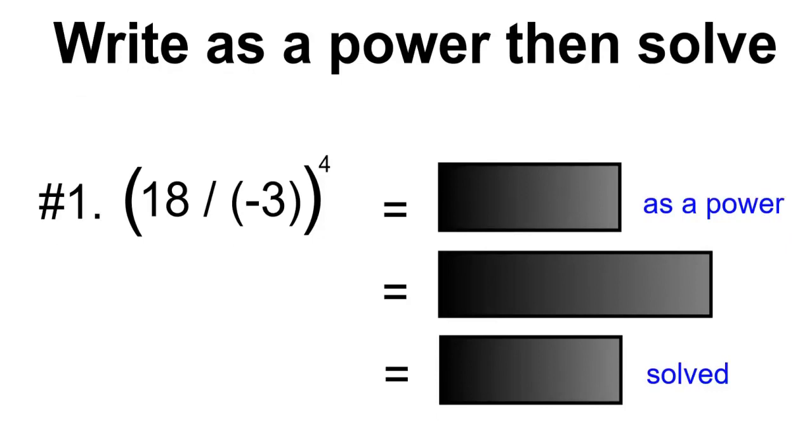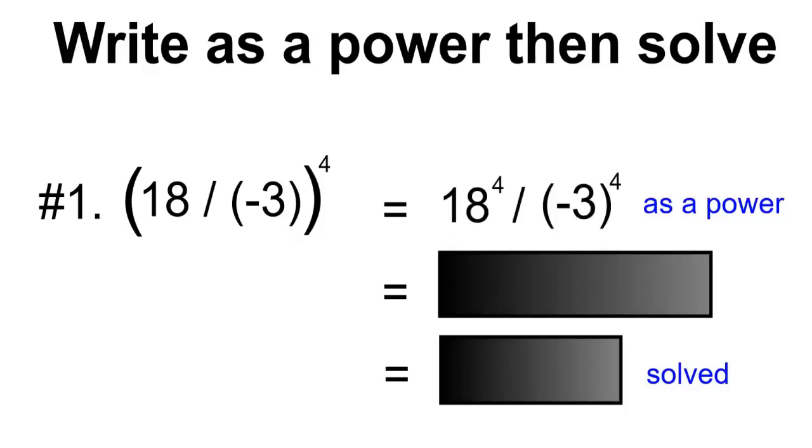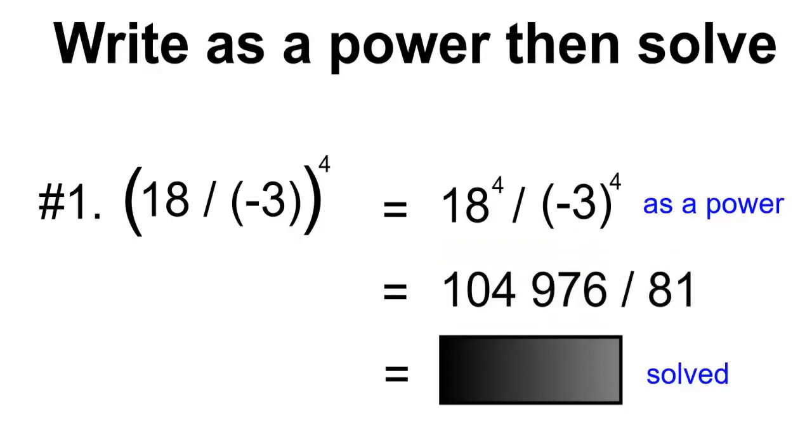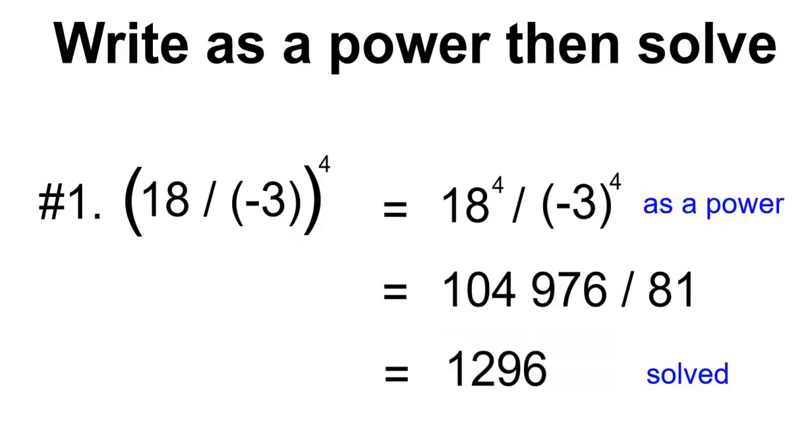Write as a power and then solve. Question number 1. 18 divided by negative 3 to the power of 4. Writing this as a power, it would be written as 18 to the power of 4 divided by negative 3 to the power of 4. Evaluate each power separately, and you'll get 104,976 divided by 81. And then solve. You'll get an answer of 1,296.